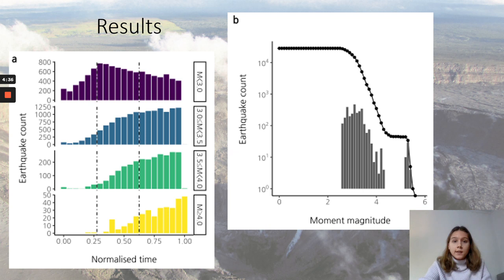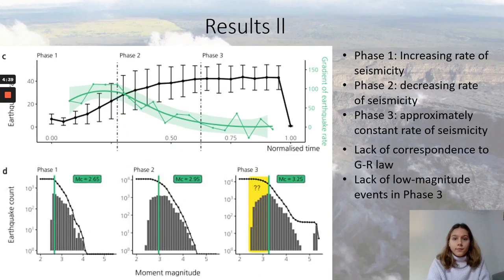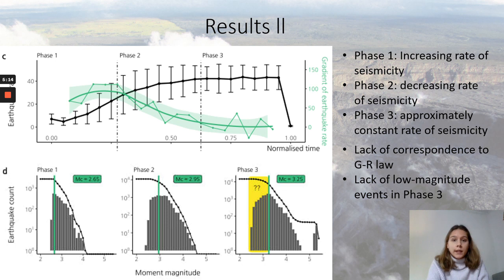This distribution resembles the characteristic earthquake model instead. In Figure C, we can see a plot of earthquake rate and its first derivative, used to identify three phases of activity: Phase 1 with an increasing rate of seismicity, Phase 2 with a decreasing rate, and Phase 3 when the seismicity rate is approximately constant. Figure D shows the frequency-magnitude distribution of earthquakes within each of the three phases. Even when considered per phase, there remains a lack of correspondence to the Gutenberg-Richter relation in Phases 1 and 3. The earthquakes in Phase 2 appear to behave according to the Gutenberg-Richter Law, whilst those in Phase 3 resemble the characteristic earthquake model. In addition, the magnitude of completeness for Phase 3 is significantly higher than for other phases.